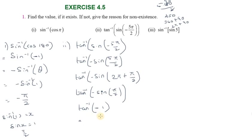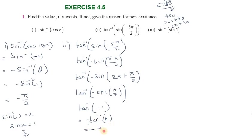Sine of π/2 equals 1, so we have tan inverse of minus 1. For tan inverse of 1: tan 45° equals 1, so tan inverse of 1 equals π/4. Applying the property tan inverse of minus theta equals minus tan inverse of theta, we get minus tan inverse of 1 equals minus π/4. That is the solution.